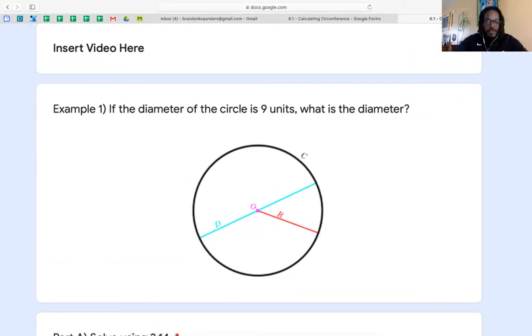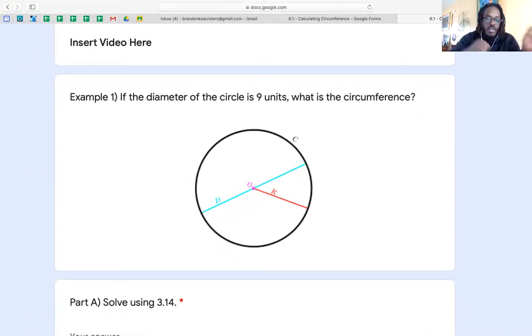So I haven't answered the video yet because we're making it right now. But first example is if the diameter of the circle is nine units, what is the circumference? And in order for me to show you all this work, I am going to put a pause on this. And I am now going to switch over to my whiteboard, which I just figured out is a really cool tool that I get to use with you guys. So I'm going to try to use it now.